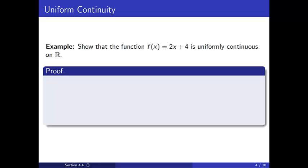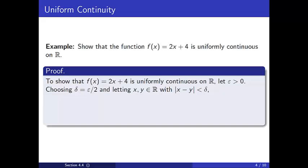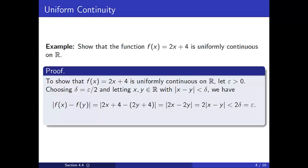Now we provide a formal proof. To show that f(x) = 2x + 4 is uniformly continuous on R, let epsilon be positive. Choosing delta equal to epsilon over 2 and letting x and y be real numbers with |x − y| < delta, we have that the distance between f(x) and f(y) equals |2x + 4 − (2y + 4)|, which simplifies to |2x − 2y|, which equals 2|x − y|, which is strictly less than 2 delta, and this equals epsilon. Thus f is uniformly continuous on R.